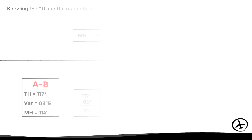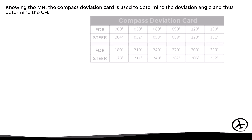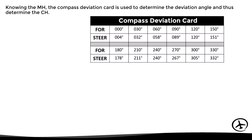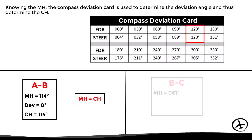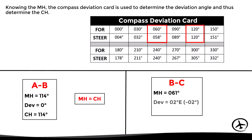Finally, using the magnetic headings and the compass deviation card, we can determine the compass headings. For leg AB, with a magnetic heading of 114°, we use 120° as reference in the deviation card, which results in a deviation angle of 0°, giving a compass heading of 114°. For leg BC, with a magnetic heading of 061°, we use 060° as reference in the deviation card, which gives a deviation angle of minus 2°, so the compass heading is 059°.